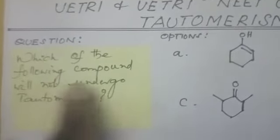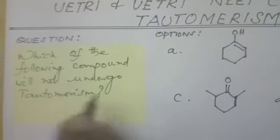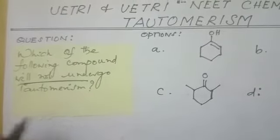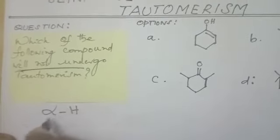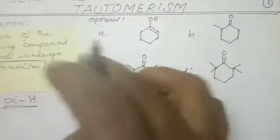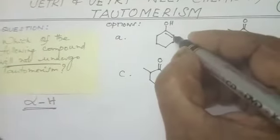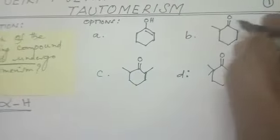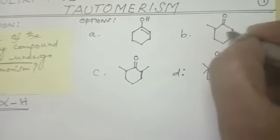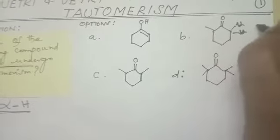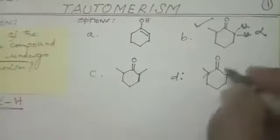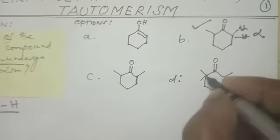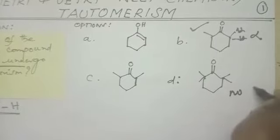Now entering into the topic of Tautomerism. The question is: which of the following compounds will not undergo Tautomerism? The condition is the compound should have alpha hydrogen. We will see which are not having alpha hydrogen. The first compound — what is the functional group here? It does not have a keto group, so we think in another direction. In the second compound, we have a keto group and alpha CH2 is available — alpha hydrogen is available, so it is answering.